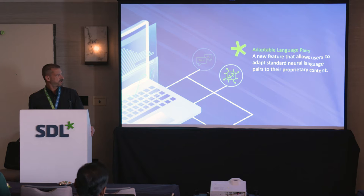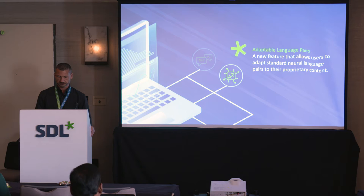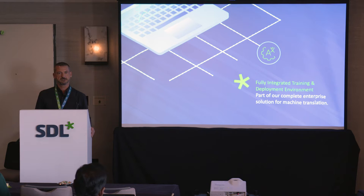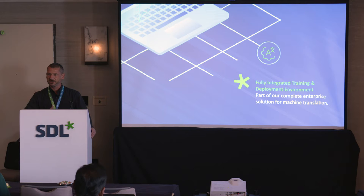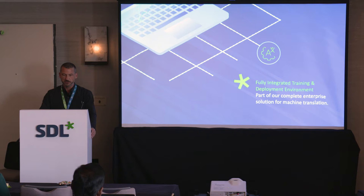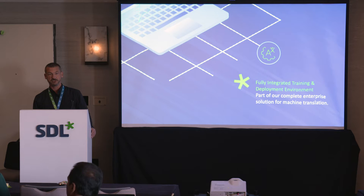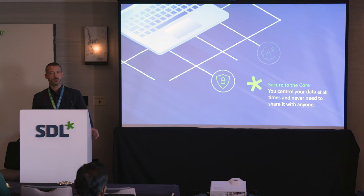What we released this year is adaptable language pairs — a language pair you can actually adapt and train with data to make it better at translating your content. It's fully integrated in the Edge on-premise solution, using the same interface, and made as simple to use as installation, quick translate, or any existing feature in Machine Translation Edge. Very easy to install, use, and deploy. And it's secure to the core — you use your own data to train your models on-premise, with no need to share your data with anyone else.